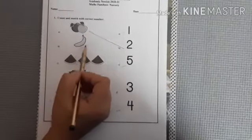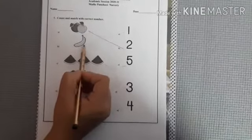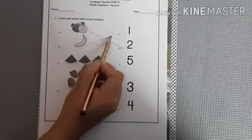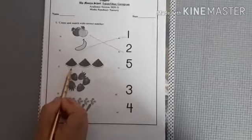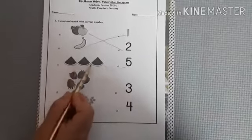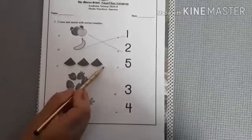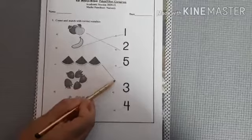So we will match this apple with number 2. How many banana? One banana. So we will match this banana with number 1. How many pieces of watermelon? 1, 2, 3.